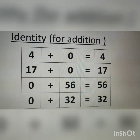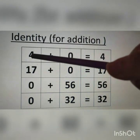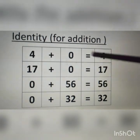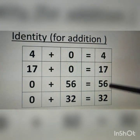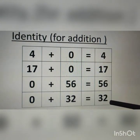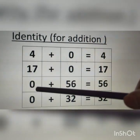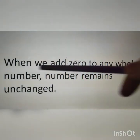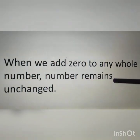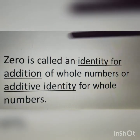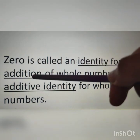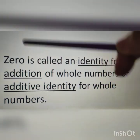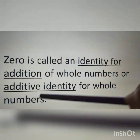Identity for addition — let us see some examples where 0 is added to whole numbers: 4 + 0 = 4, 17 + 0 = 17, 0 + 56 = 56, 0 + 32 = 32. By adding 0 to any whole number, we get the same number. When we add 0 to any whole number the number remains unchanged. Therefore 0 is called the additive identity for whole numbers.